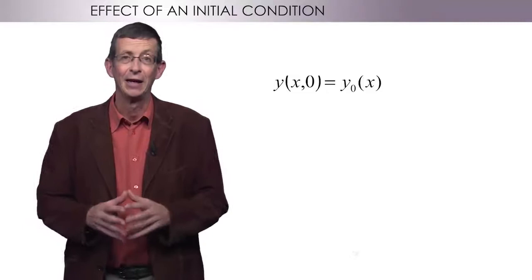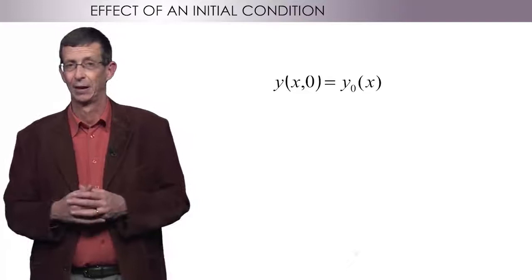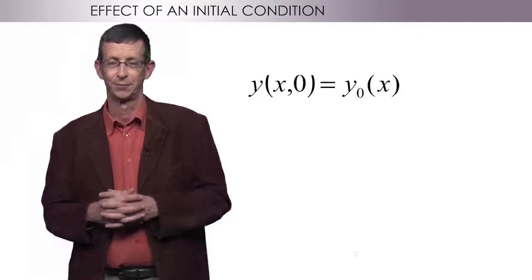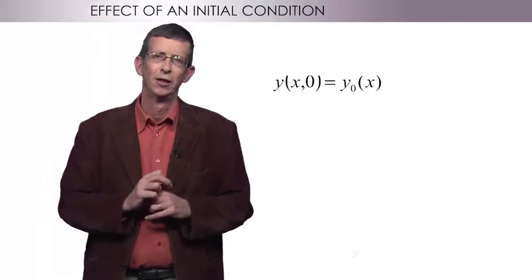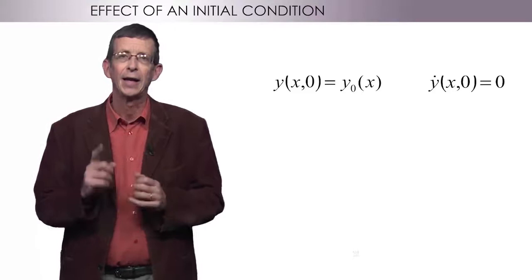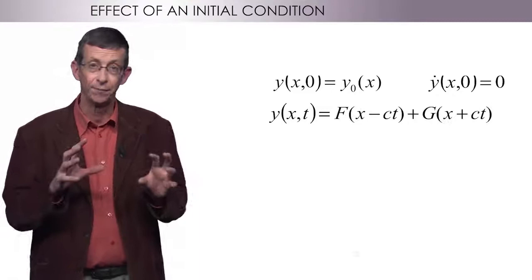Let us use this to see what happens after an initial deformation of the cable, say a shape y naught of x here. This means that y of x times zero equals y naught of x. I also need to give a condition on the velocity of the cable. For instance, no velocity, y dot equals zero. Can I solve the equation? For this, I need to find f and g.